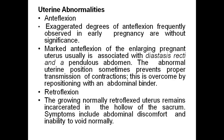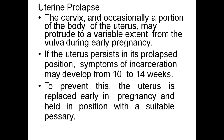Retroflexion: the growing retroverted uterus normally remains incarcerated in the hollow of the sacrum. Symptoms include abdominal discomfort and inability to void normally. Uterine prolapse: occasionally, a portion of the body of the uterus may protrude to a variable extent from the vulva during early pregnancy. If the uterus persists in its prolapsed position, symptoms of incarceration may develop from 10 to 14 weeks. To prevent this, the uterus is replaced early in pregnancy and held in position with a suitable pessary.